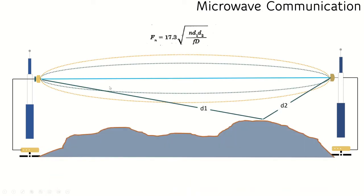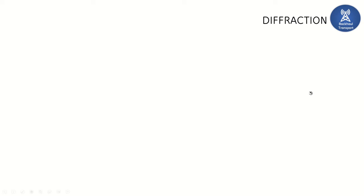In the Fresnel zone formula, d1 is the distance from the reflection point to the transmitting antenna, and d2 is the distance from the reflection point to the receiving antenna. We now move on to diffraction — a characteristic of electromagnetic waves when they travel past an obstacle with grazing incidence, causing some energy to be dispersed.